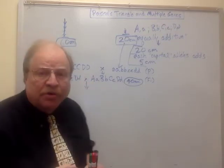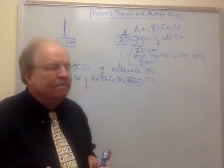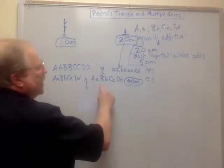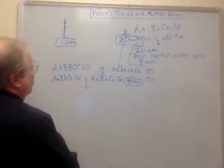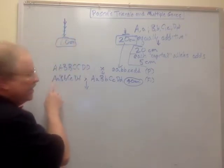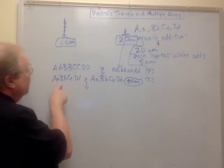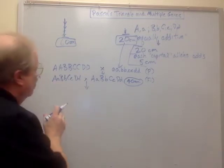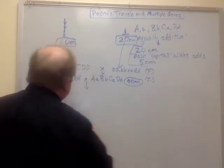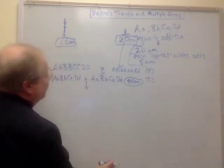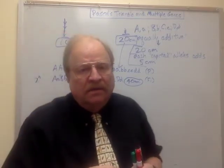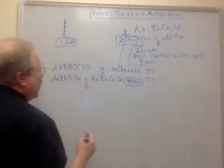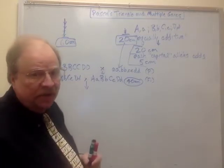We now have a tetrahybrid cross. If you wanted to solve this the long, complicated way, you could make a Punnett square, filling in all the gametes this parent makes down the left side and all the gametes across the top. The number of different gametes the F1 individual makes is 2 to the n, where n is the number of genes. So we're going to have 2 to the 4th power — 16 gametes. We'd have to fill in 16 gametes on each side, fill in every one of those squares, and it would take two test periods to complete. So let's not do it the hard way — let's do it the simple way using Pascal's Triangle.